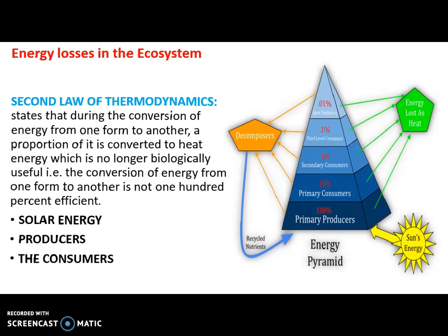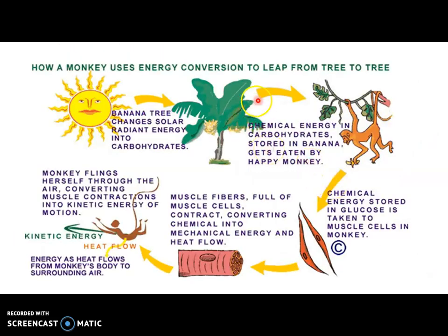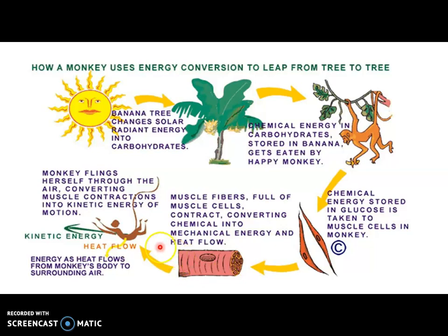For example, consider how a monkey converts energy. The sun gives energy to plants, which convert it to chemical energy. The monkey consumes this chemical energy and, using its muscles, converts it into mechanical energy to do work. The monkey then converts mechanical energy into kinetic energy for motion. At each of these steps, energy is lost because metabolic activities release some energy as heat. So energy conversion is not 100% efficient — some amount is always released as heat.